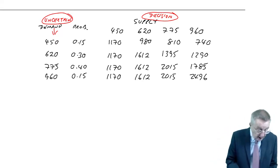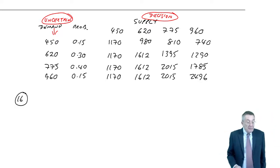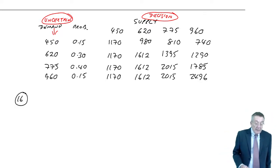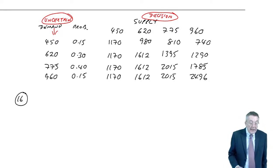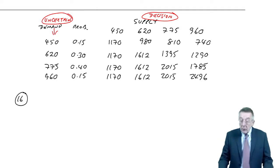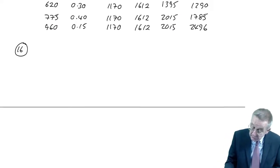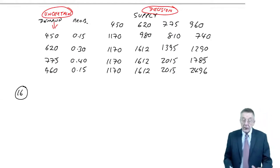Here, what's uncertain is the demand. The demand can be any one of those four levels. And what he's having to make a decision on is how many meals to actually supply? Shall he supply 450 or 620 and so on? So this is what we're making the decision on. Which of those four choices, 450, 620, is going to be the best one? Let's have a go. The first question 16: If Milo adopts a Maximin approach, which daily supply level will he choose? Well here, really, you should have learned the rule, there should be no question.